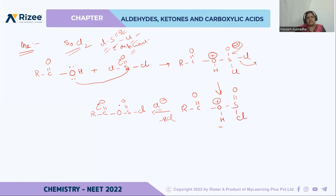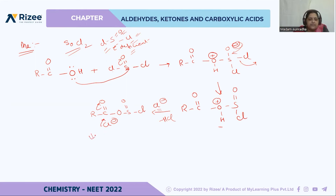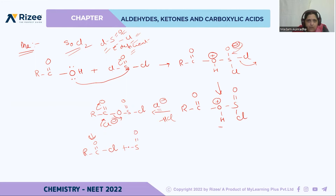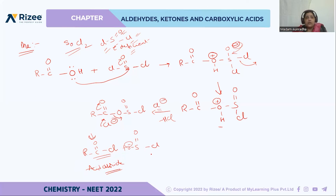Again, oxygen extracts the electrons towards itself, so the carbon atom attains a positive charge. Cl minus comes and attaches to this carbon. This gives R-C(=O)-Cl plus, and the leaving group departs — SO2 with the electrons as O minus. This is our acid chloride, obtained by the reaction of SOCl2, thionyl chloride.